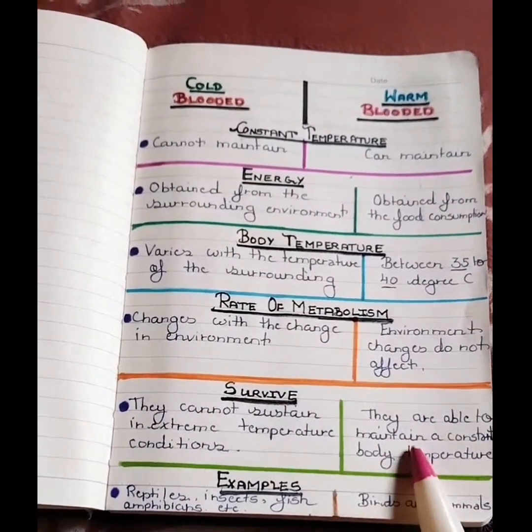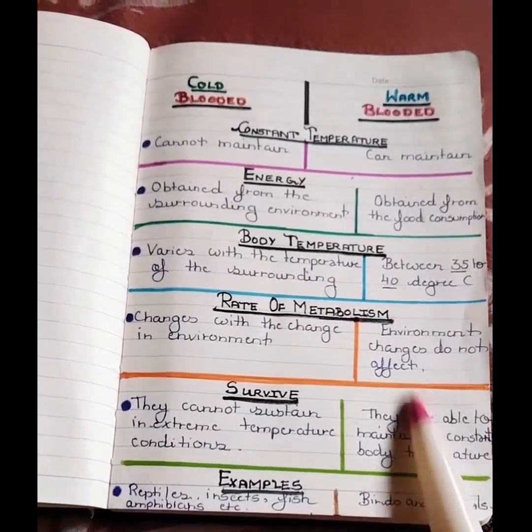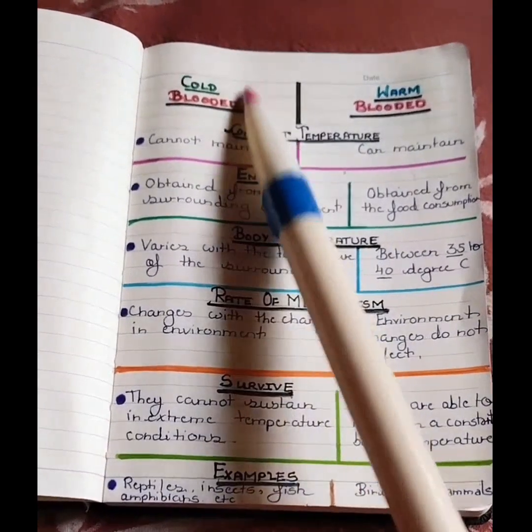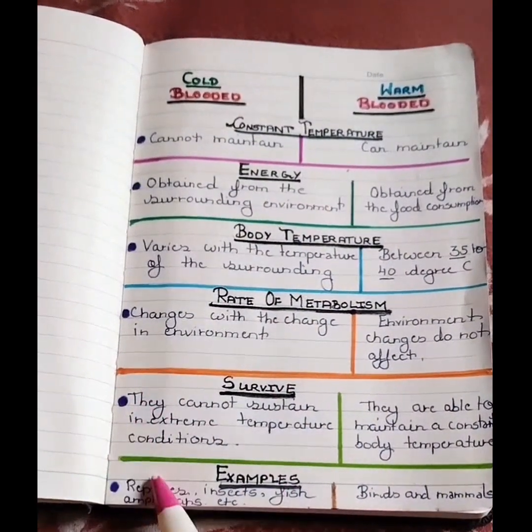Like the first one. Now when we talk about examples, cold-blooded includes reptiles, insects, fish, and amphibians.